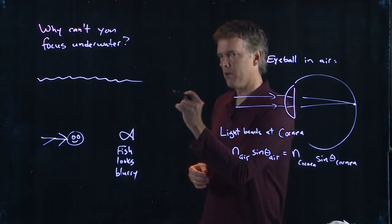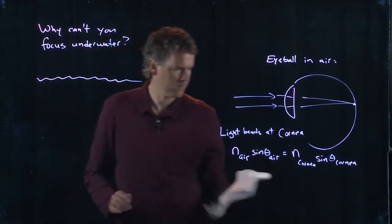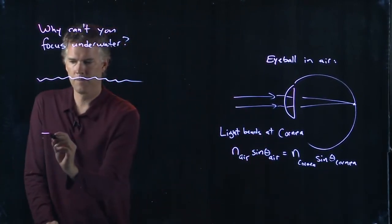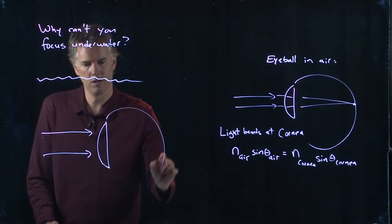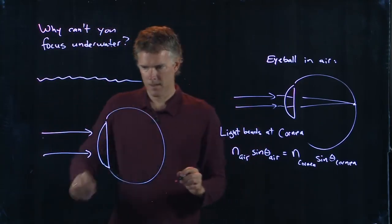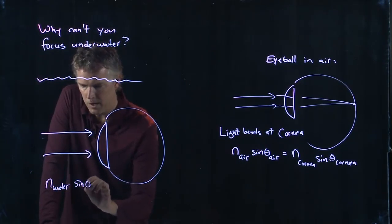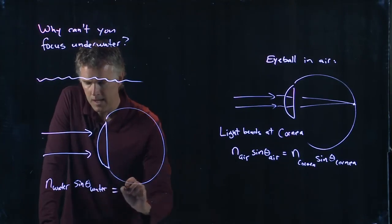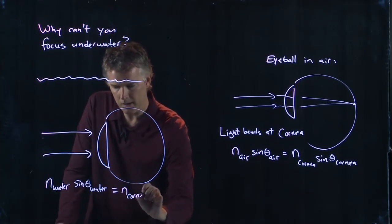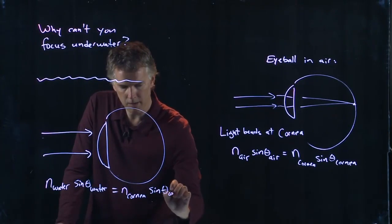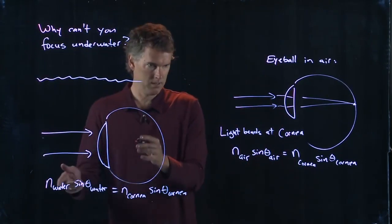But what happens when you're underwater? When you're underwater, here come the light rays in. Here's our cornea. There's our eyeball. And now we're not in air anymore. We are in water. And so Snell's law says that n of water sine theta of water equals n of the cornea sine theta of the cornea. And so it's going to bend if those are different.